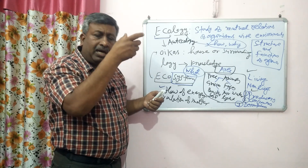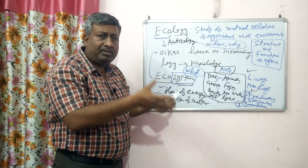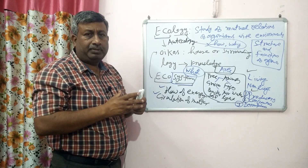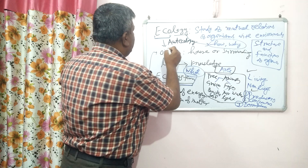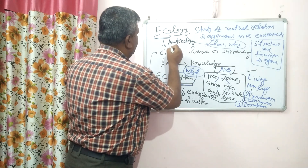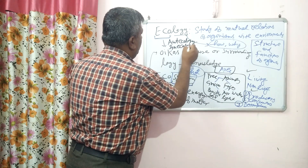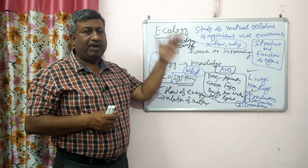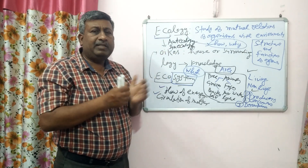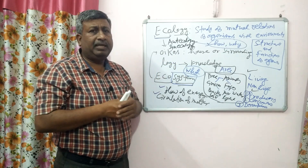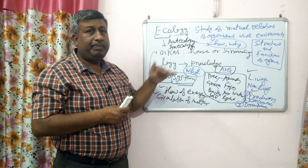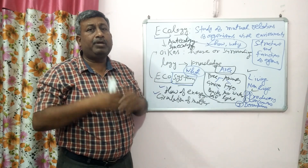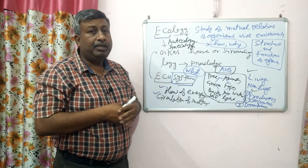If you are studying about a single or individual species, then it is auto-ecology. And if you are studying about a group of many species, then it is known as syn-ecology. So in case of auto-ecology, we study only a single or individual species or individual organism with the environment. And if you study about many species, many groups with the environment, then it is syn-ecology.